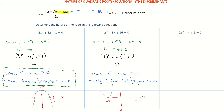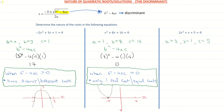Looking at our third example: 2x squared plus x plus 5 equals 0. Here, a is 2, b is 1, and c is positive 5. The question asks us to determine the nature of the roots, so we focus on the discriminant b squared minus 4ac. Subbing in: 1 squared minus 4 times 2 times 5 gives us 1 minus 40, which is negative 39.